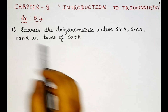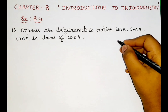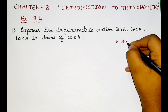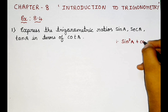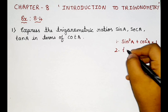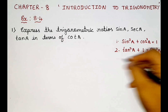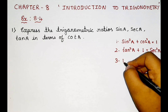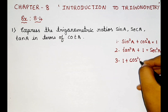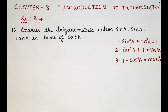First, let me just write the identities so that it will be helpful for you guys. The first identity is sin²A + cos²A = 1. The second identity is tan²A + 1 = sec²A. And the third identity is 1 + cot²A = cosec²A. These are the identities we are going to use.